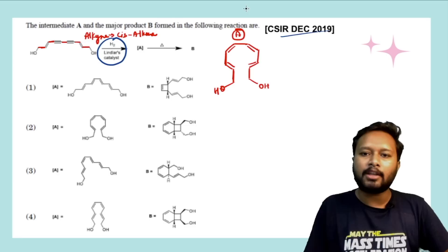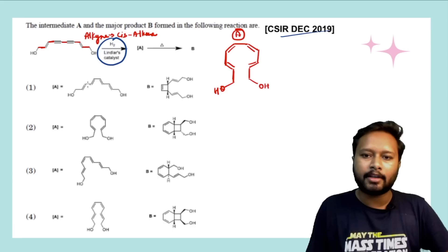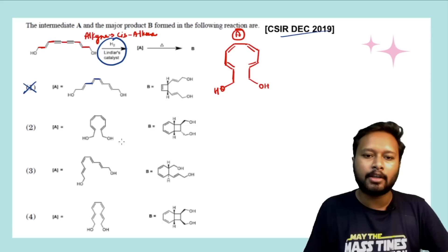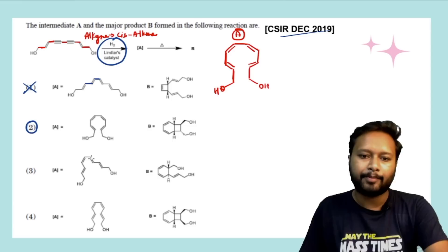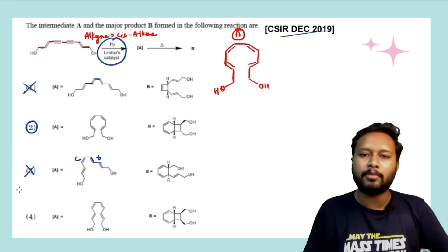Option A will not be correct because this particular bond is not cis — it's a trans alkene which they have formed, so that is not the correct option. The second one looks quite similar, so that is our probable answer. Option three has a cis-trans type arrangement which is also not correct. Option D has cis alkenes on one side and trans on the other, so that can also be a probable option. We now have two probable options.